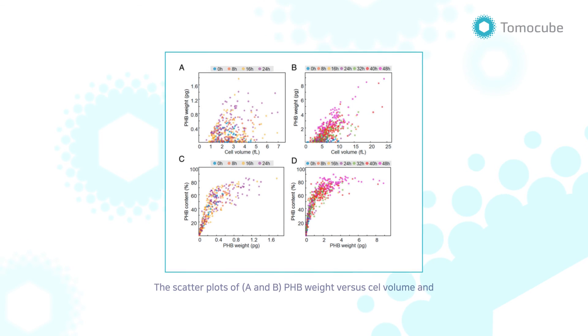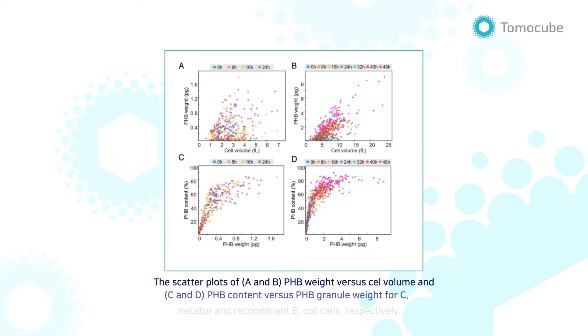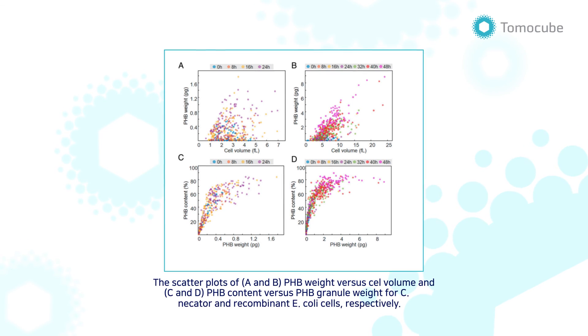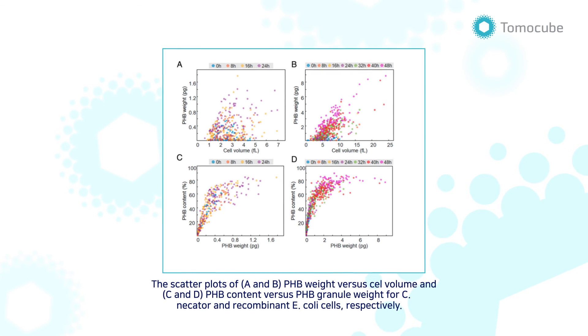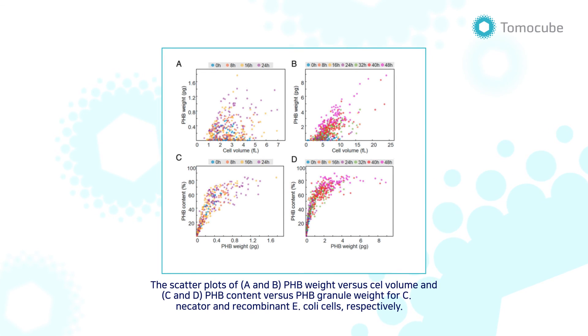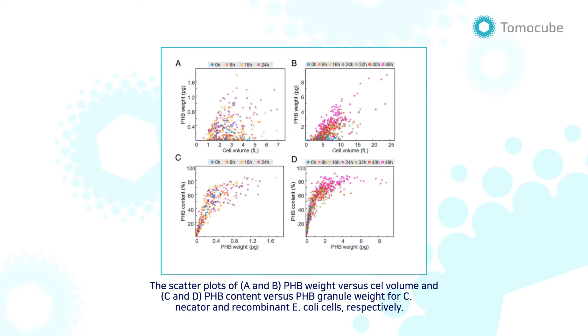The scatter plots of A and B show PHB weight vs. cell volume, and C and D show PHB content vs. PHB granule weight for C. necator and recombinant E. coli cells, respectively.